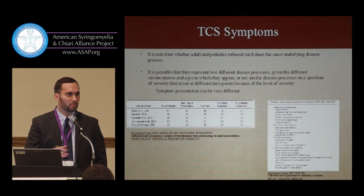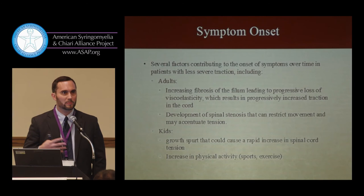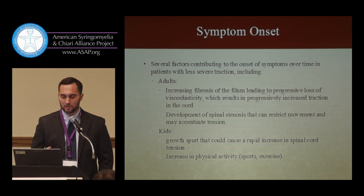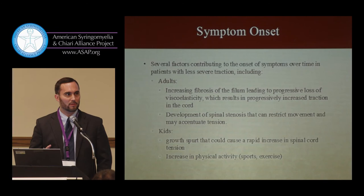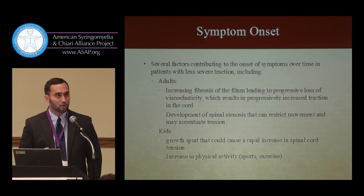Symptom onset can be affected by multiple things. In adults, as they age, fibrosis or thickening of the filum can make it more inelastic, so the cord tethers and symptoms worsen. Developing spinal stenosis or arthritis can aggravate underlying tethered cord. In kids, sudden growth spurts, increases in physical activity, or trauma can also aggravate an underlying disease.